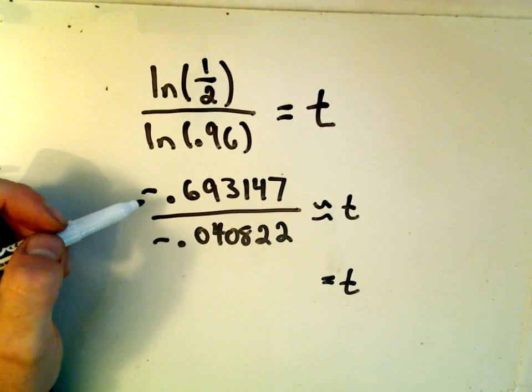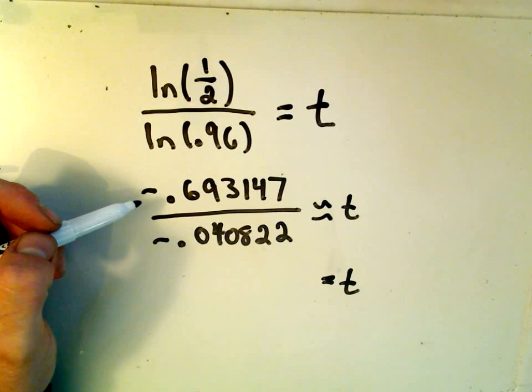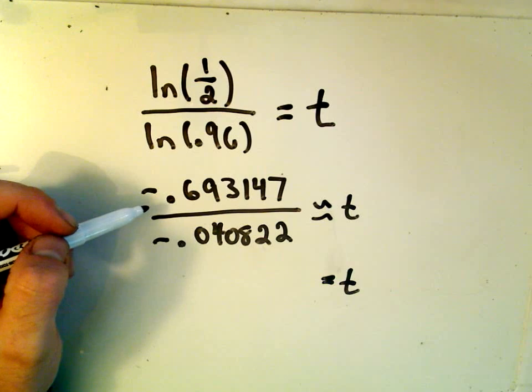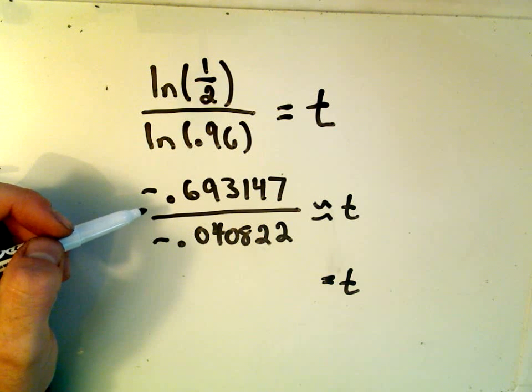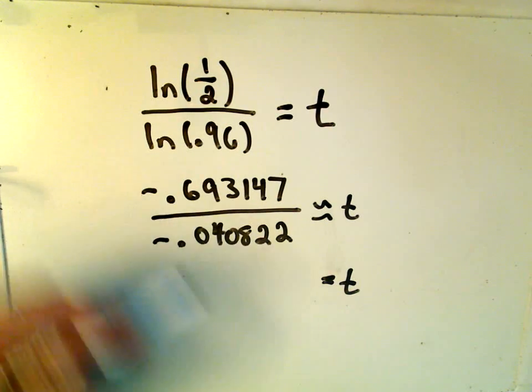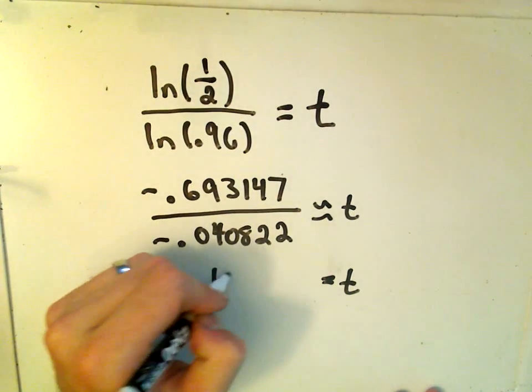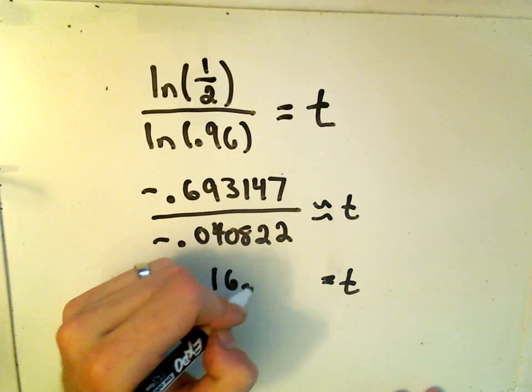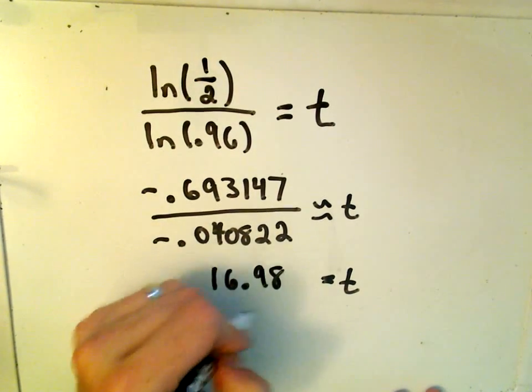And so now we're approximating. So I'll say t is approximately equal to that. So now let's just simplify it down. 0.693147 divided by 0.040822. I'm getting this to be roughly equal to 16.98 years.